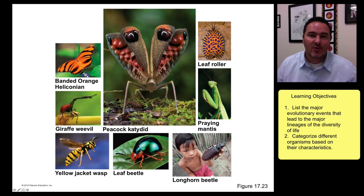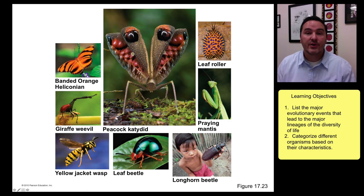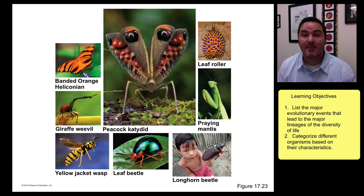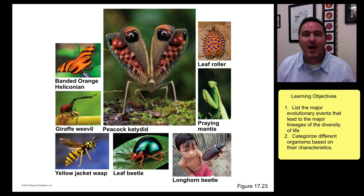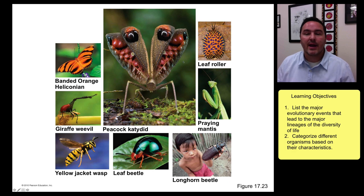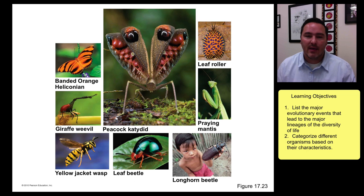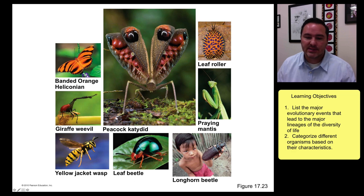Then you have the insects — as an entomologist, this is my favorite group. Arthropods as a whole are the most diverse group of organisms on the planet. We have about a million described arthropods, largely because they contain the insects. We have about 800,000 to 900,000 described insects right now, with many more that need to be described and many millions that have already gone extinct.